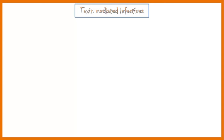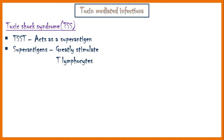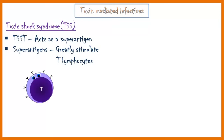Now let's discuss about toxin-mediated infections of Staphylococcus aureus. The first one is toxic shock syndrome. It is caused by the toxic shock syndrome toxin, and it acts as a superantigen. Superantigens stimulate T lymphocytes to a greater extent — basically about 20% more than usual. As a result, T cells secrete large amounts of cytokines, including tumor necrosis factor and interleukin-1. These cytokines generate a bunch of systemic effects which may resemble a condition like septic shock. Therefore, toxic shock syndrome can be fatal.